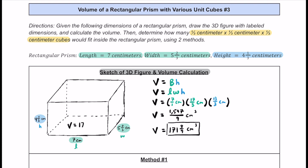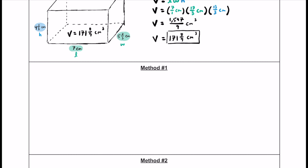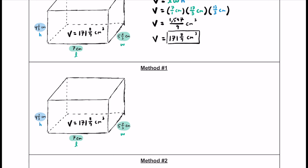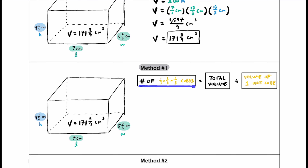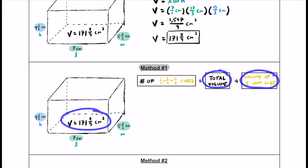Now that we know the volume of the rectangular prism, let's figure out how many of those little one-third by one-third by one-third unit cubes fit inside it. For Method 1, we'll divide the total volume of the prism by the volume of one unit cube. Let's first figure out the volume of one of these little cubes: one-third times one-third times one-third equals 1/27 of a cubic centimeter.